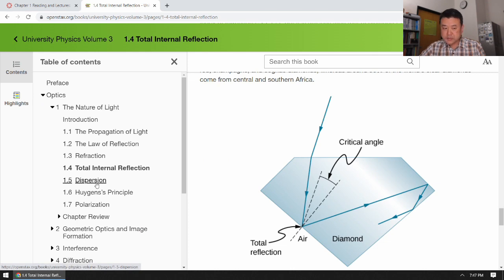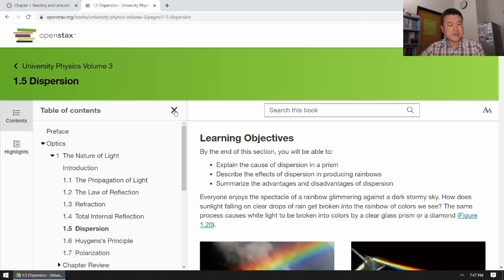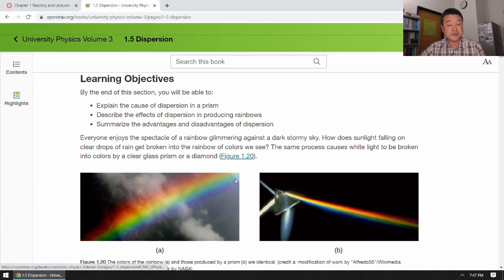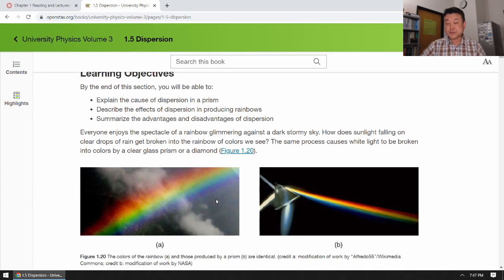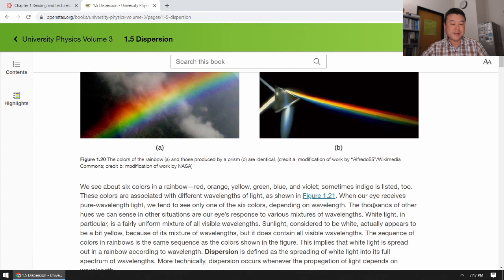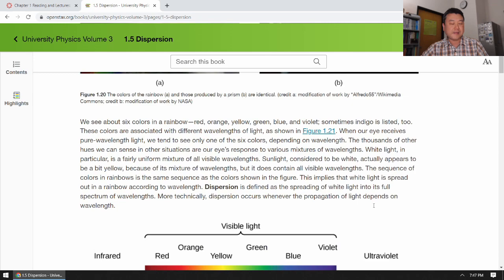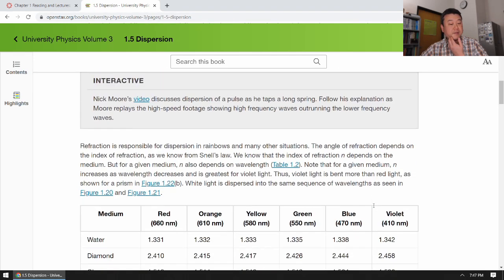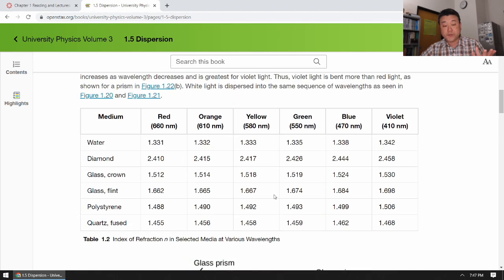Dispersion. Dispersion is, I guess it's a bit of a side topic in this class. So it explains things like rainbows or some rainbow colored things you might have seen with the prism. And what it is, is a relatively simple phenomenon that when you look at the index of refraction of some material, it's wavelength dependent. That's what dispersion refers to.